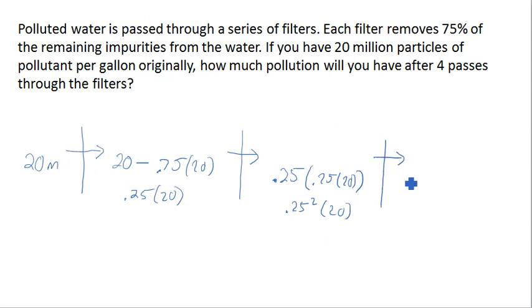Then we could go through a third pass, and now we're going to have 25% of what we had here times 20. And so we end up with 25% cubed times 20. And then we could pass through our fourth filter, and you can probably guess that we're going to end up with 0.25 to the fourth times 20 left over.